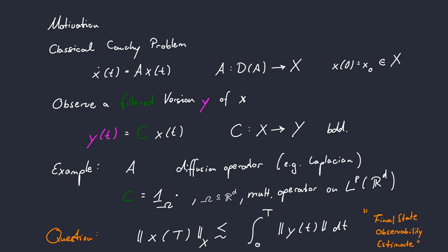An estimate of this type is called the final state observability estimate. And we want to find certain conditions on our system to guarantee the existence of these type of estimates.